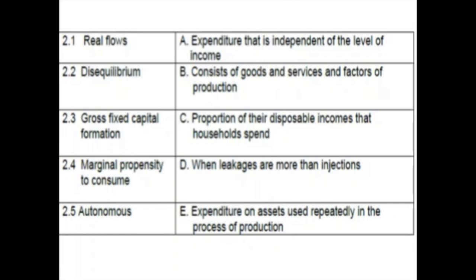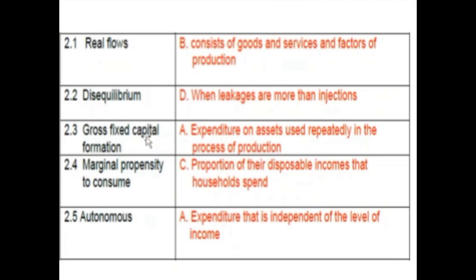Gross fixed capital formation is expenditure on assets used repeatedly in the process of production — think of factory machinery and equipment. The marginal propensity to consume is the proportion of income that you actually spend. Currently, the economic situation is such that a whole salary gets spent every month with nothing left to save.